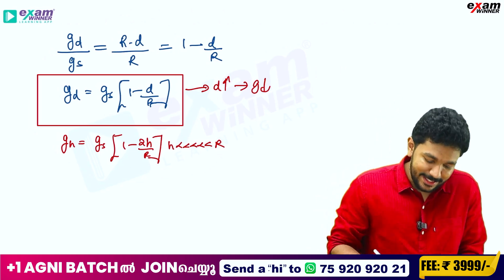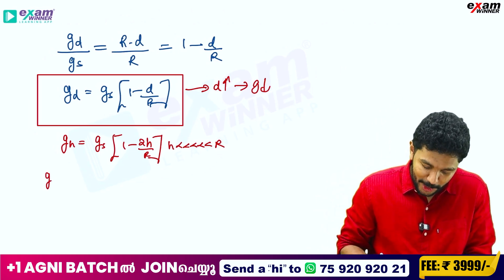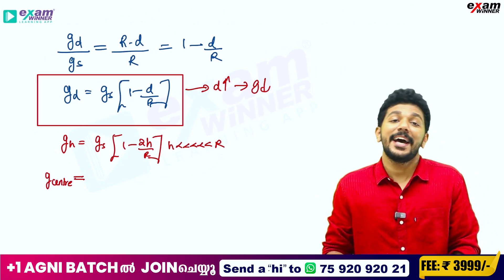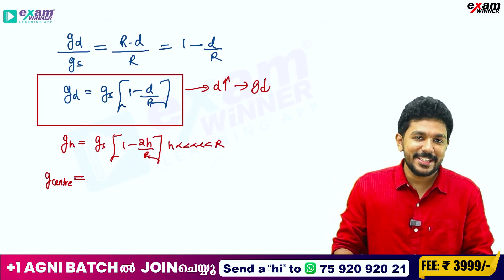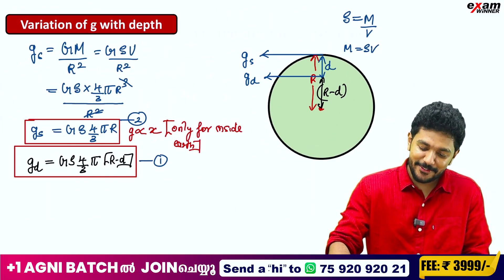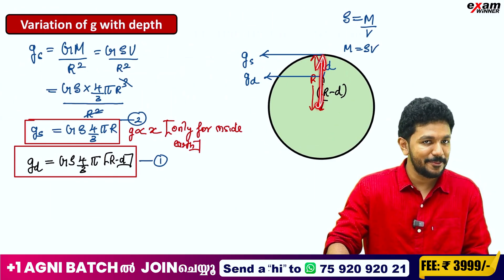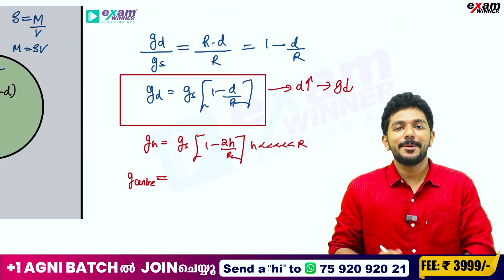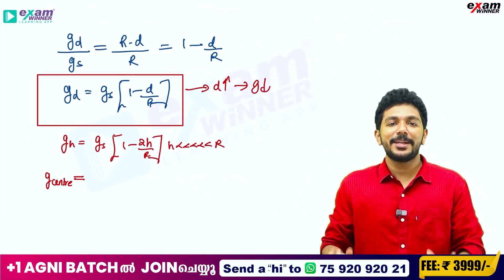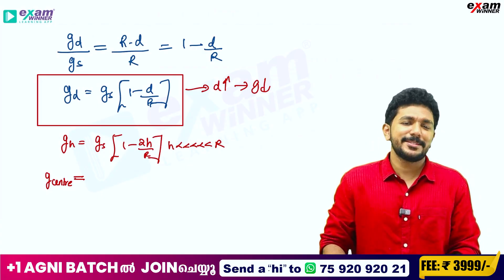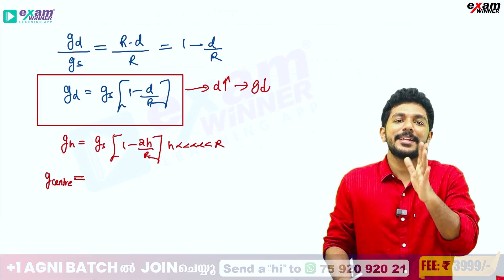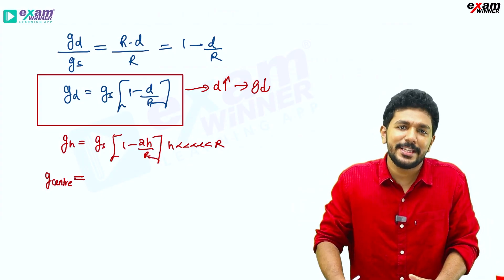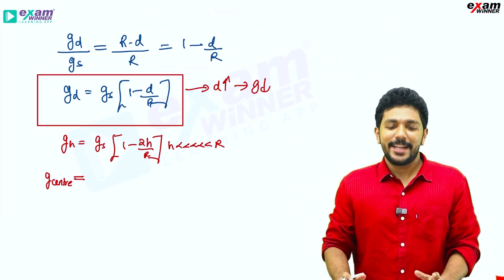I have g at the center. I will tell you what is the value of acceleration due to gravity at the center of the earth. At the center of the earth, depth D equals the radius of the earth R. Substituting in the formula gives g equals zero at the center. If you have questions, please put them in the comment box. Bye bye and take care.